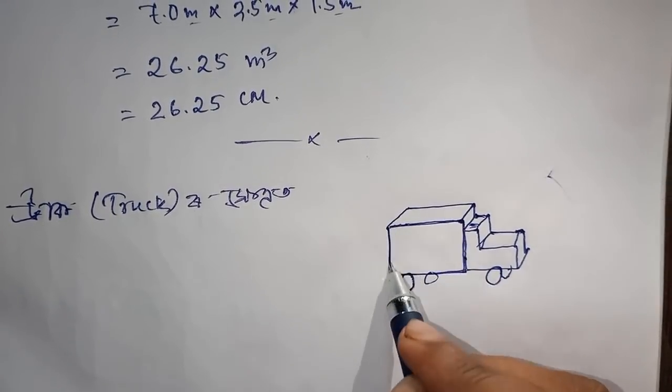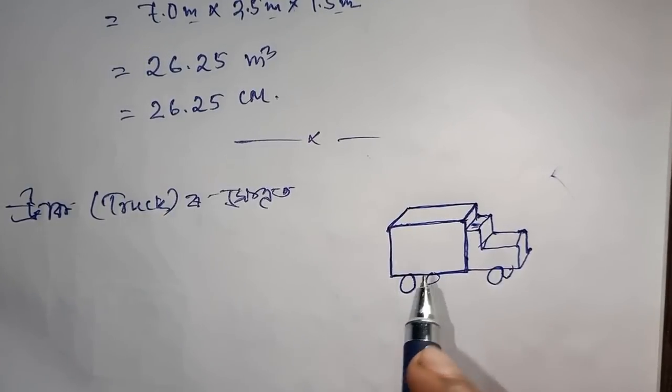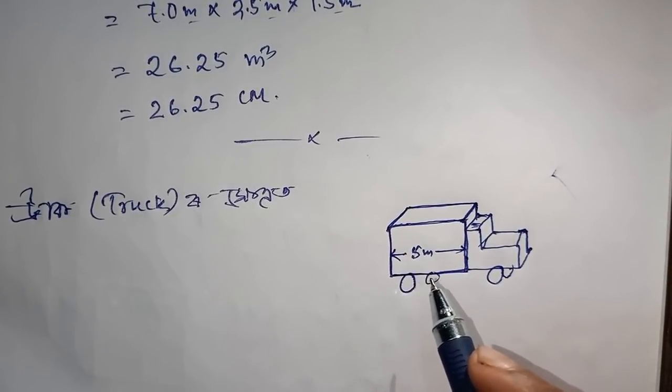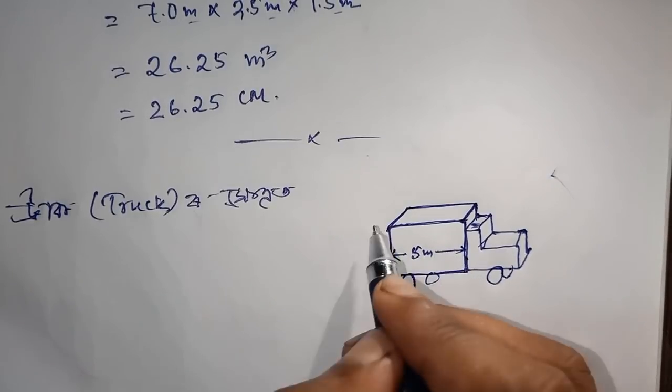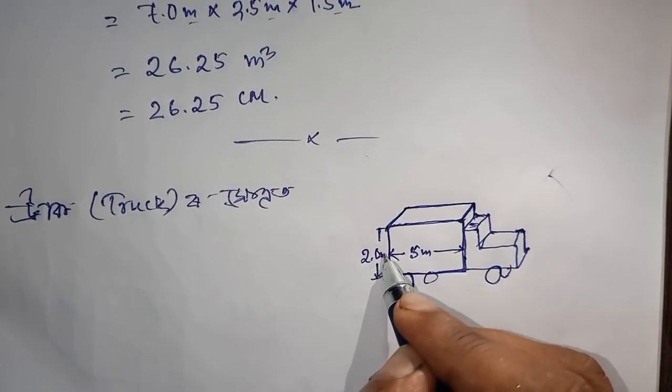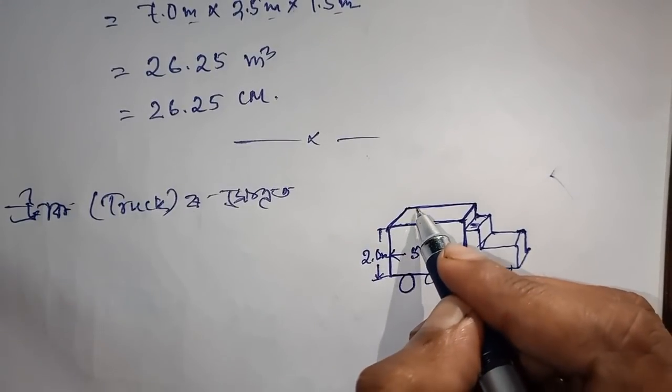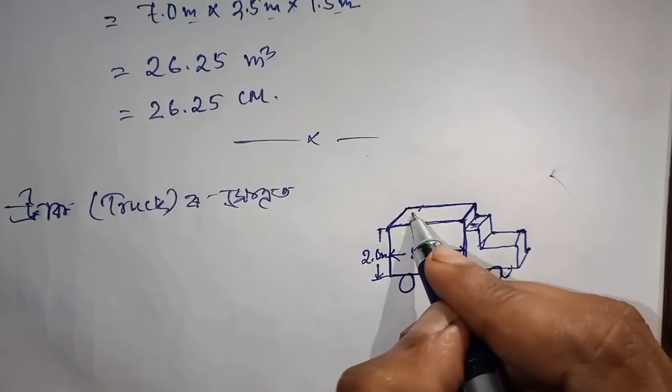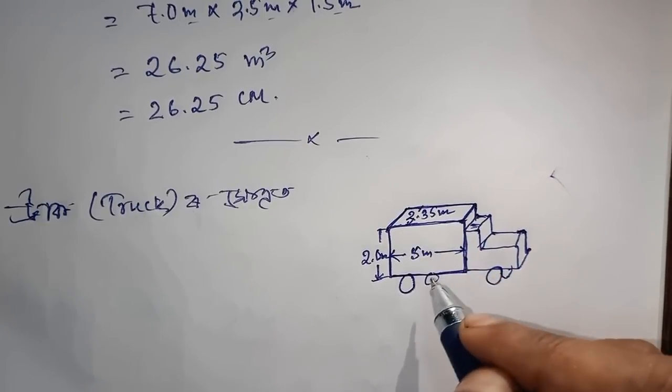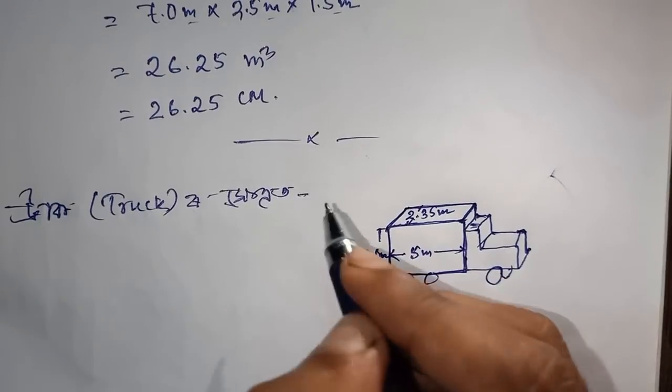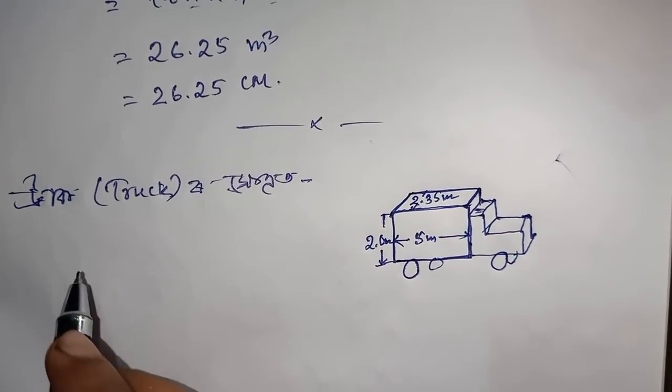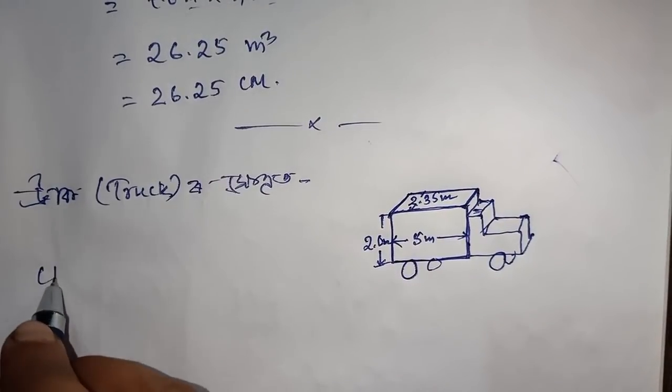For this example, the full length is 5 meters. The height is 2.0 meters. The breadth is 2.35 meters. Length × height × breadth gives us the CM.